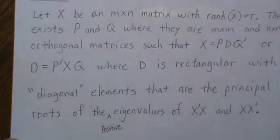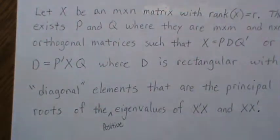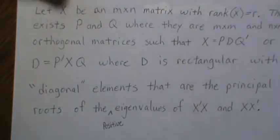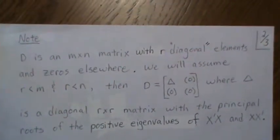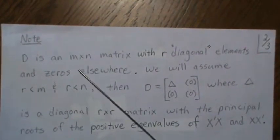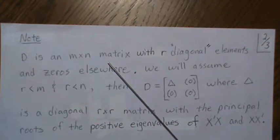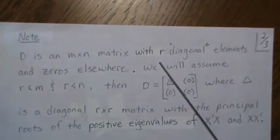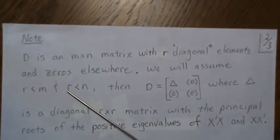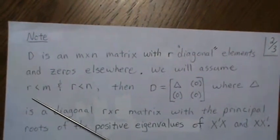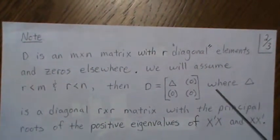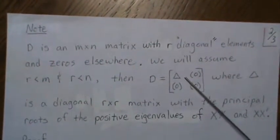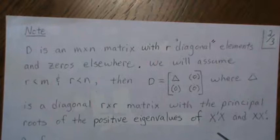Now I want to spend a minute on what I mean by 'diagonal' — this is my wording, and other people phrase it a little differently. D is an m by n matrix, so it's not necessarily a square matrix, with r diagonal elements (in quotes) and zero elsewhere. We will assume for this video that r is less than m and r is less than n. Then D has this form, where delta is the diagonal r by r matrix with the principal roots of the positive eigenvalues of x-prime-x.